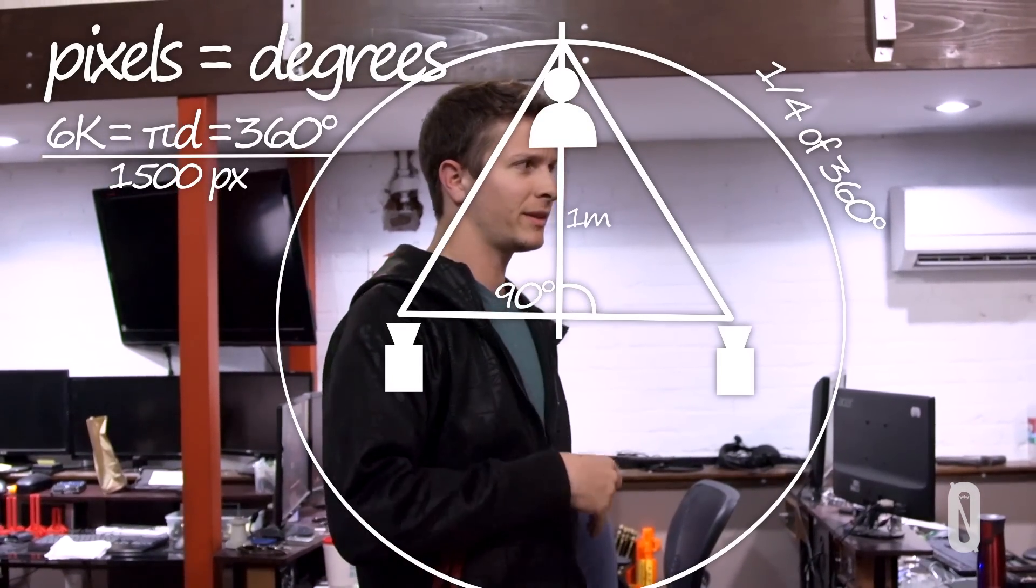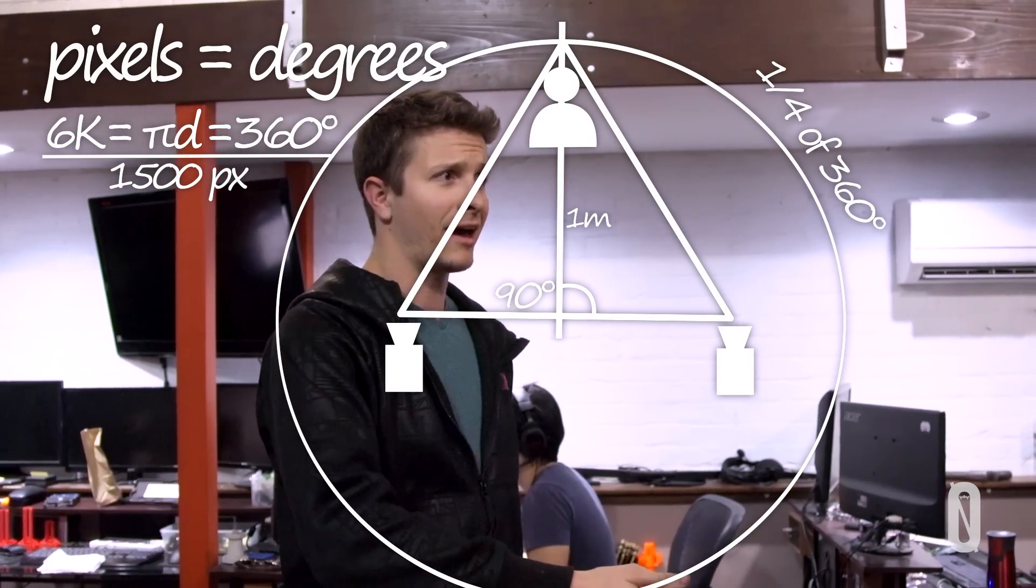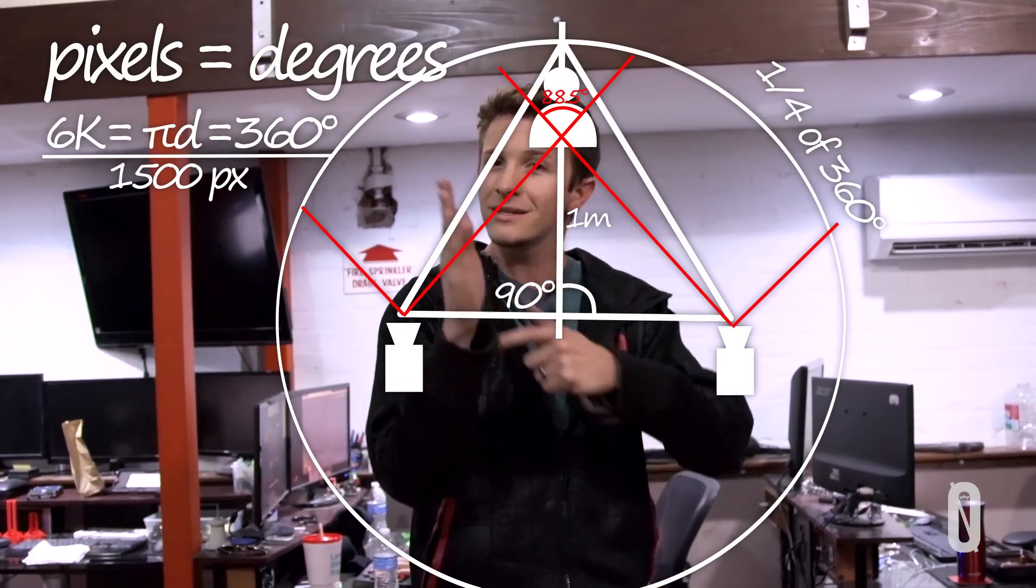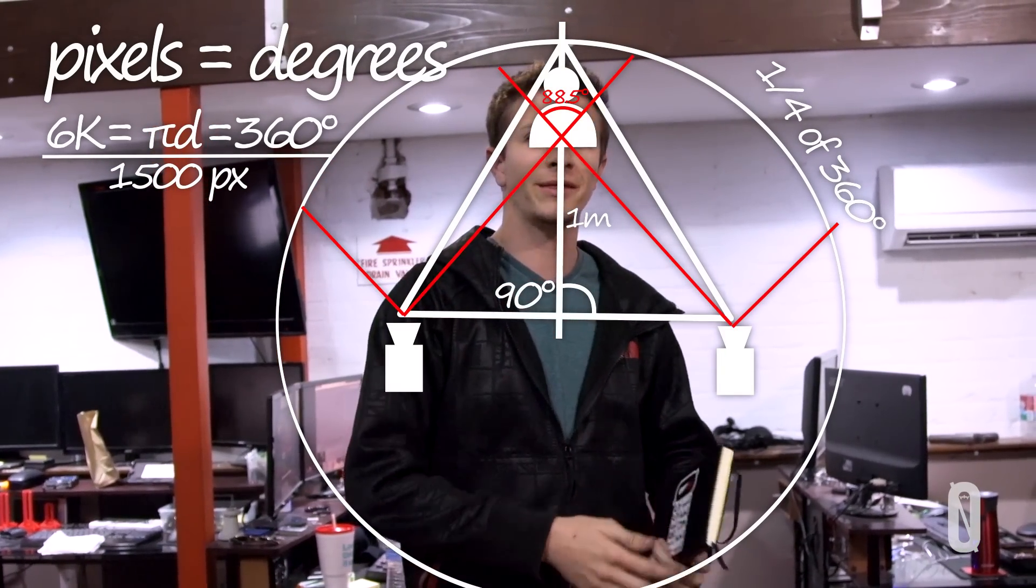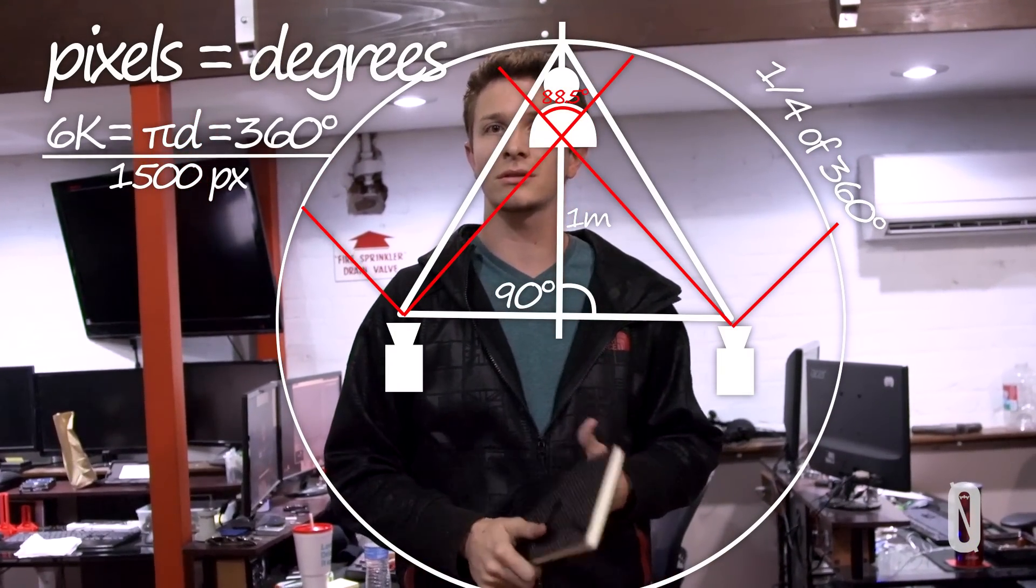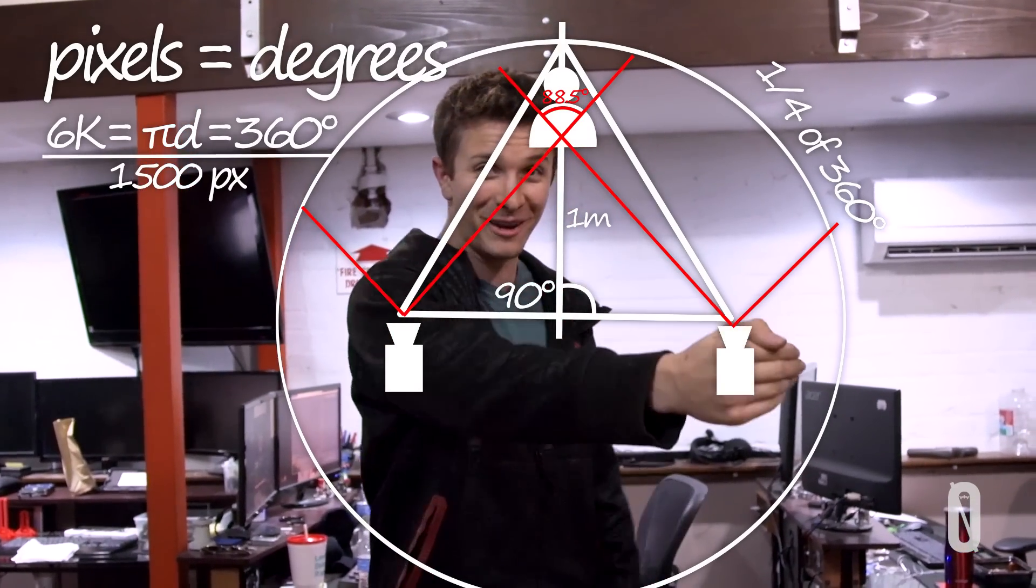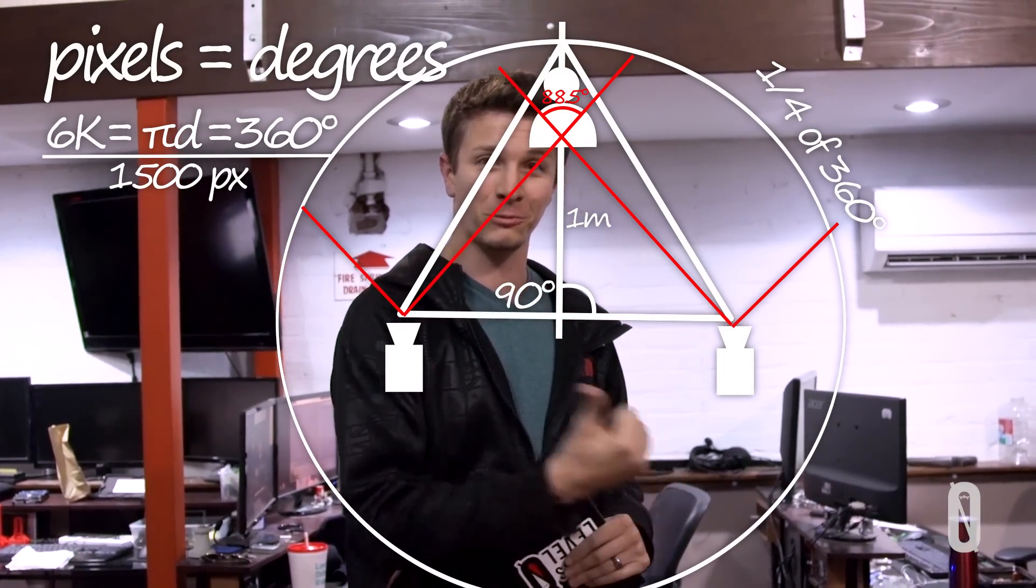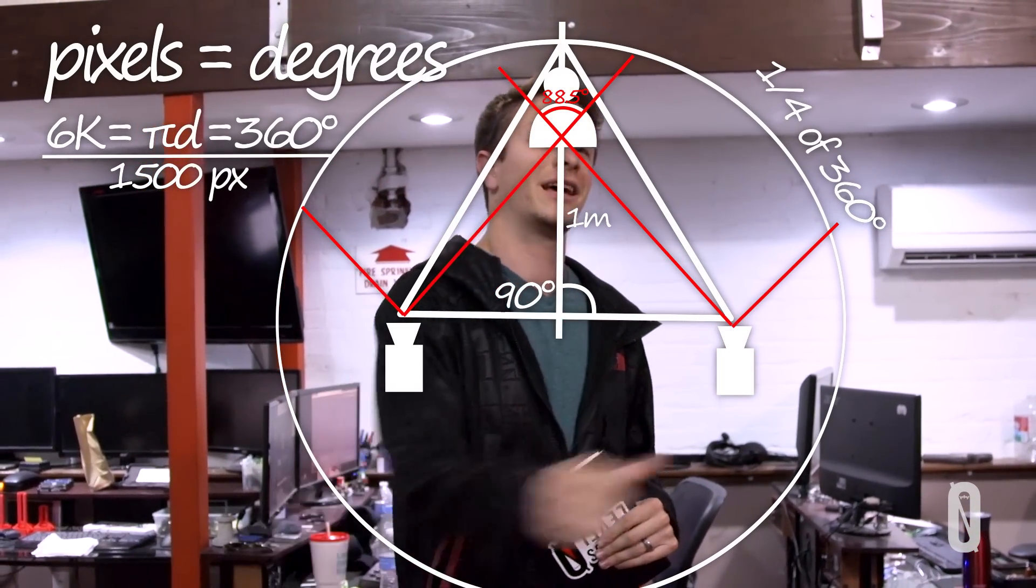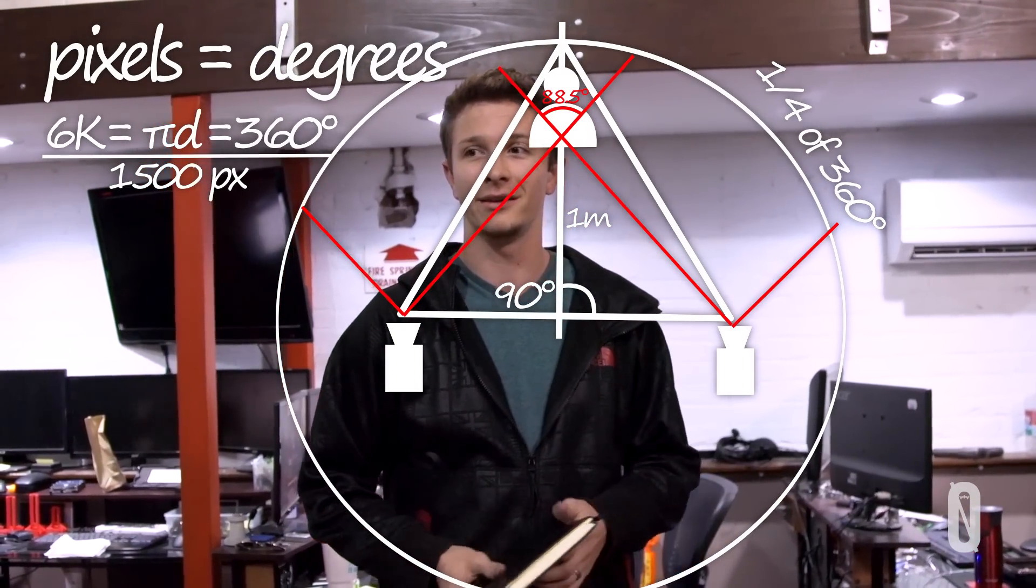Basically what it comes down to: we figured out that something that's a meter away is only gonna have 88.85 degrees, which correlates to I think 19 pixels offset. So anything that's a meter away from the camera will need to be shifted to the right 19 pixels and shifted to the left 19 pixels for each eye.